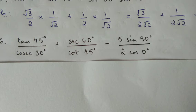Next, number 6: tan 45° over cosec 30°, plus sec 60° over cot 45°, minus 5 sin 90° over 2 cos 0°. The values are: sin 30° is 1 by 2, so cosec 30° is 2. cos 60° is 1 by 2, so sec 60° is 2. cot 45° is 1.